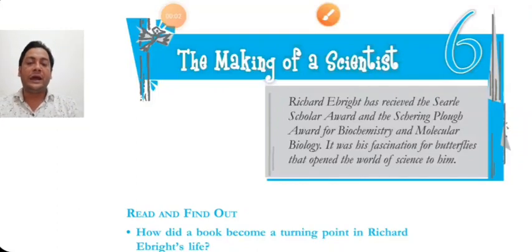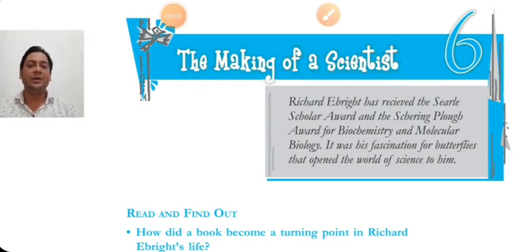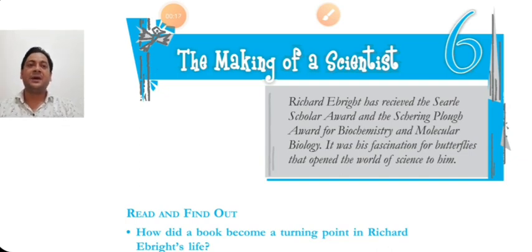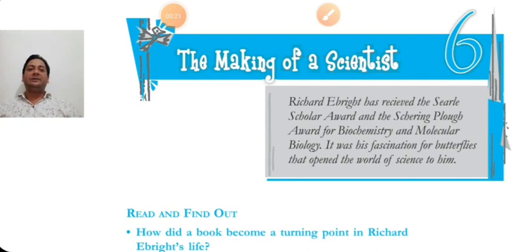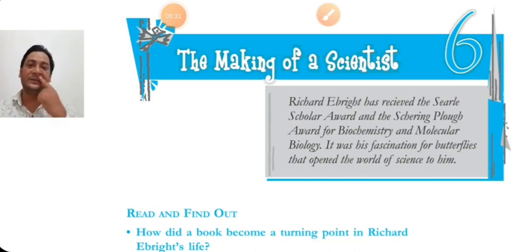Hello everybody, welcome to Chicavati International Academy. I am Manoj Kumar and today we are going to talk about a chapter from the Class 10 book 'Footprints Without Feet'. The chapter number is 6: 'The Making of a Scientist'. The meaning of the title is how a scientist is built or created, what type of struggle, determination, and curiosity is required.